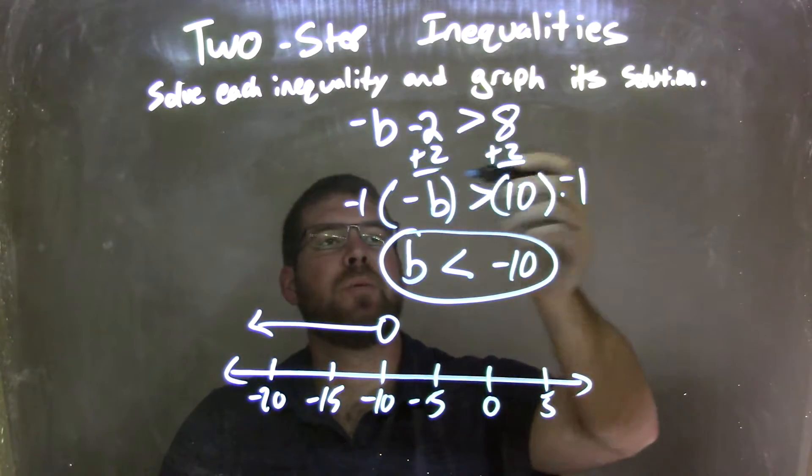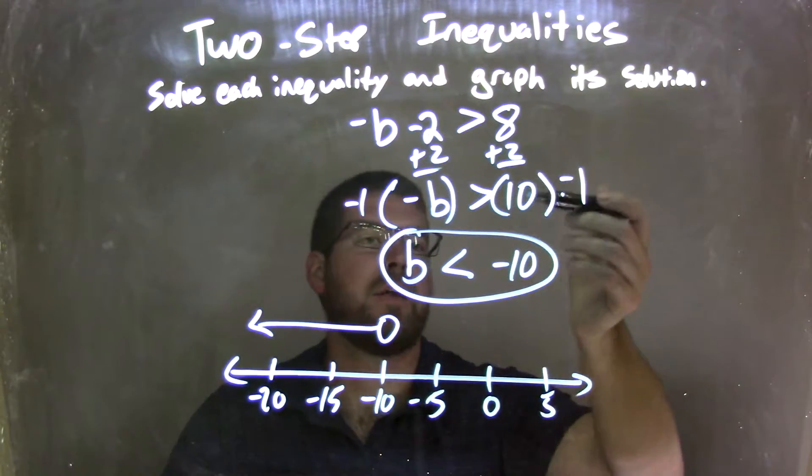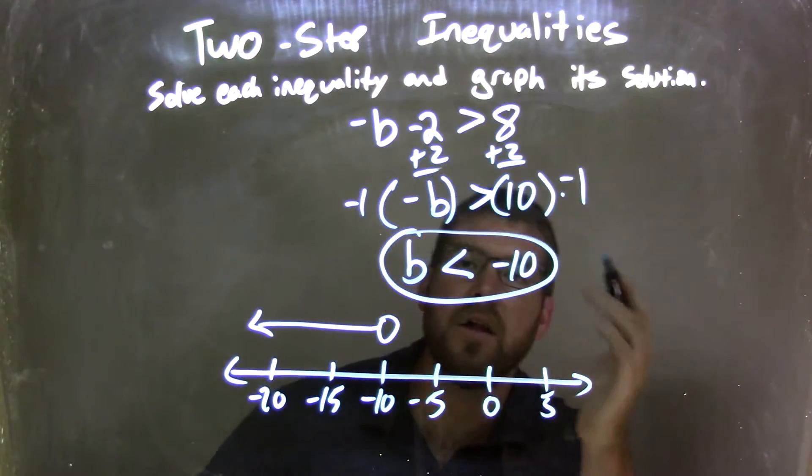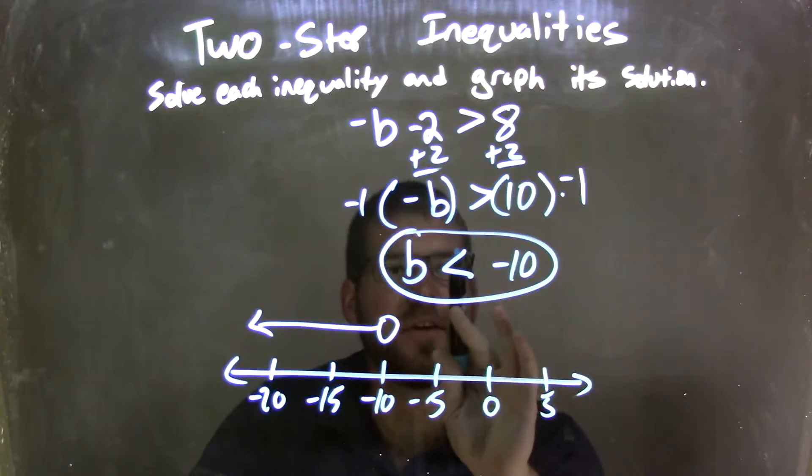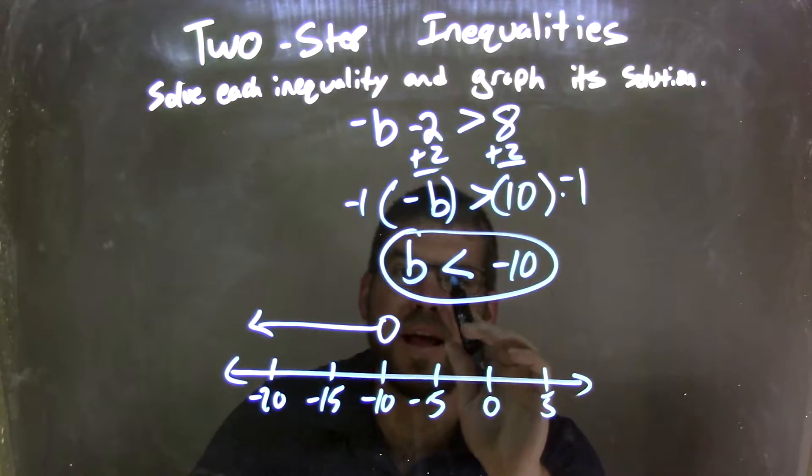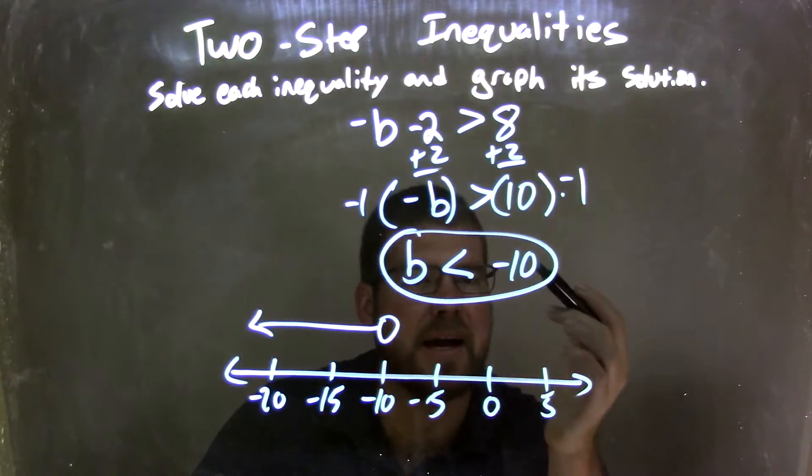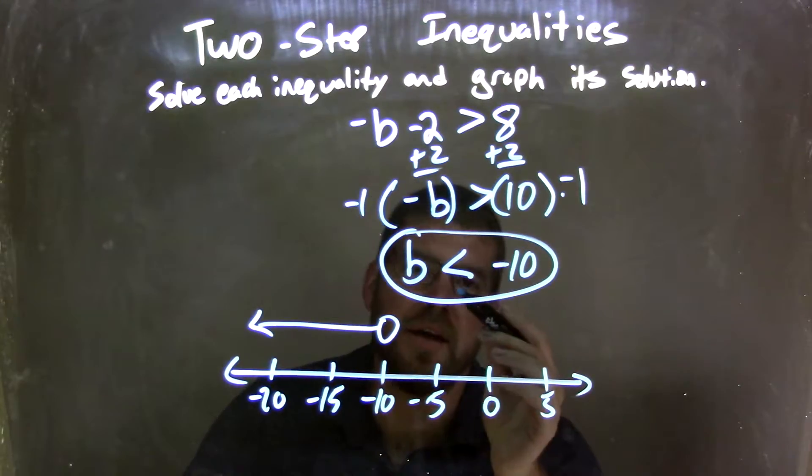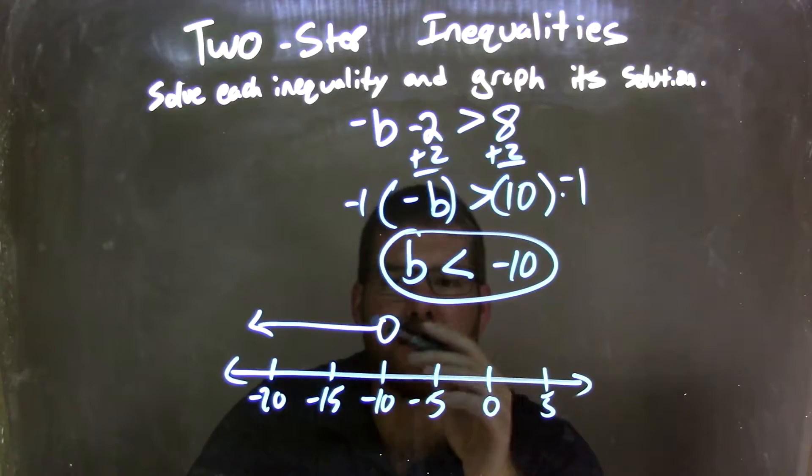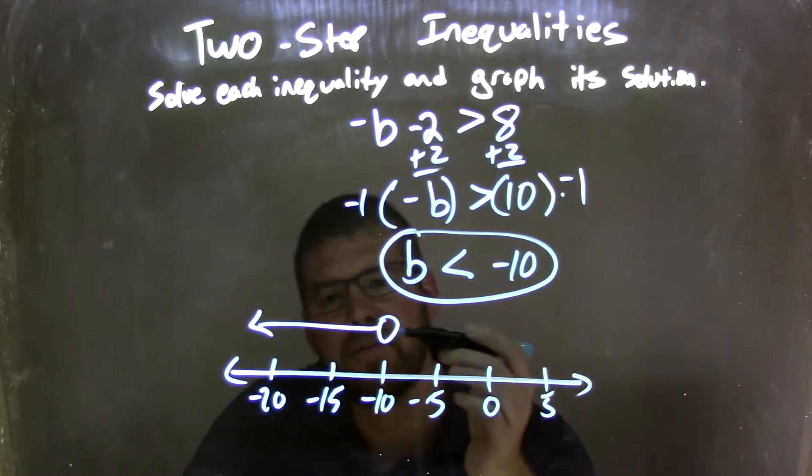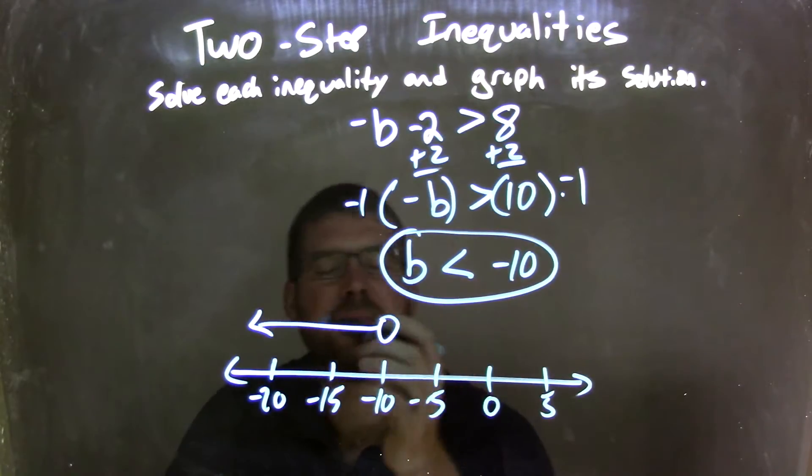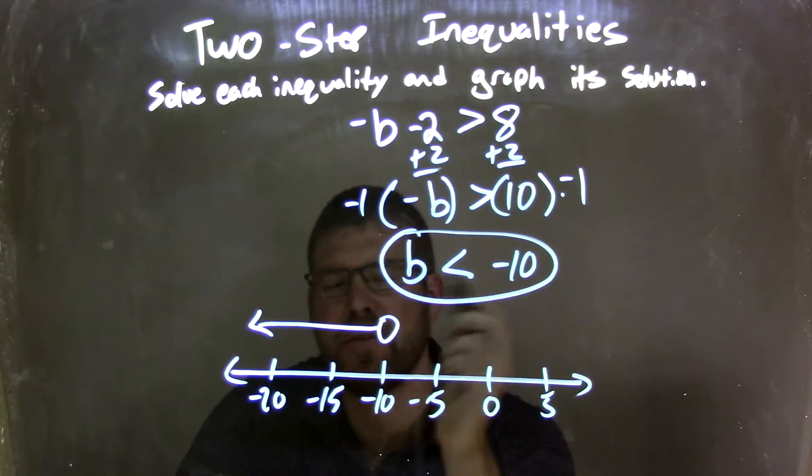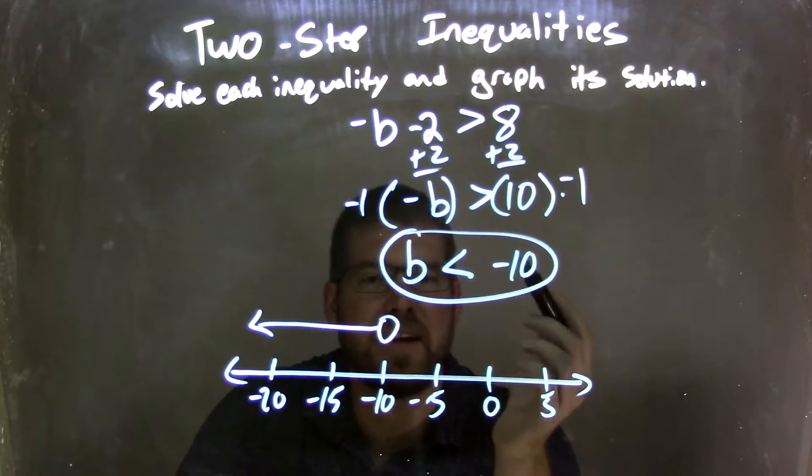So as a recap, we added 2 to both sides, giving me negative b is greater than positive 10. I multiply both sides by negative 1 over the inequality there. That caused the greater than sign to become a less than sign. So positive b is less than negative 10. I then put an open circle at negative 10 because it's not equal to, it's just less than. And then it's less than, so I put an arrow to the left. And so now I have my graph that matches my final answer of b is less than negative 10.